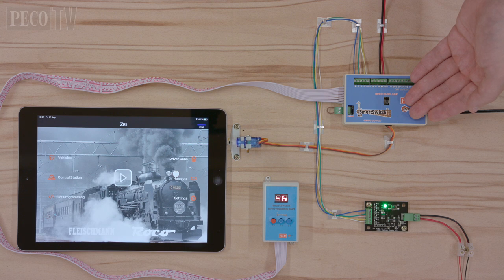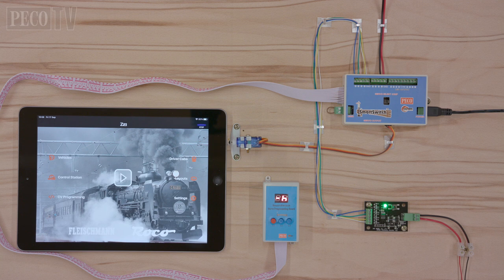For example, if you program the system to address 28, servo four will be programmed to this number. Servo three will be on 27, servo two will be 26, and servo one will be 25.